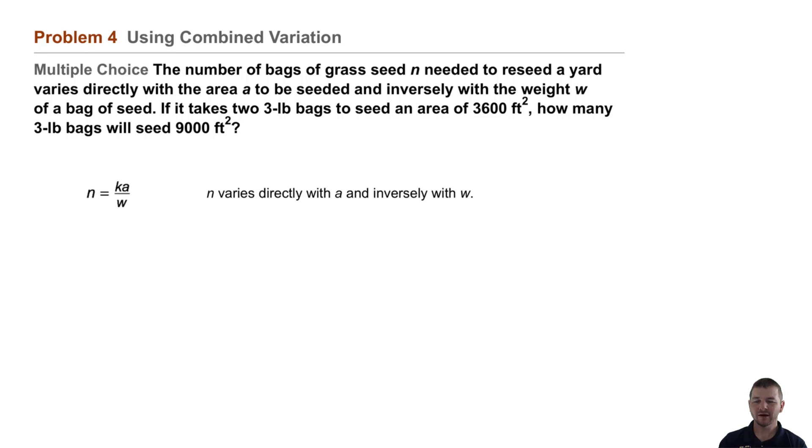Well, since we know that n varies directly with a and inversely with w, we'll write our formula n equals the constant of variation k times a over w. We'll substitute the given values for n, for a, and for w, and our formula becomes 2 equals 3,600k over 3.